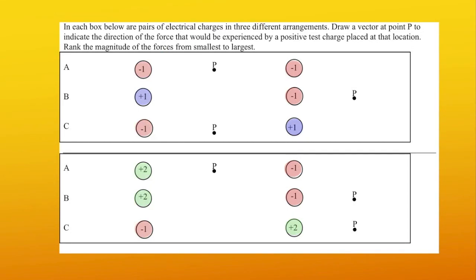Now let's take a look at a few other examples. In each box below, there are pairs of electrical charges in three different arrangements. We want to draw a vector at point P to indicate the direction of the force that would be experienced by a positive test charge placed at that location. We also want to rank the magnitude of the forces from smallest to largest. Let's get started with the first one — the positive test charge P is going to feel a force to the left towards that negative one Coulomb charge.